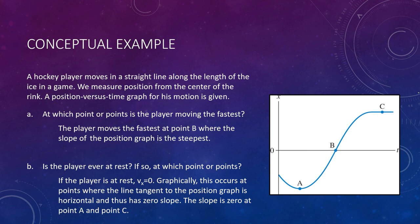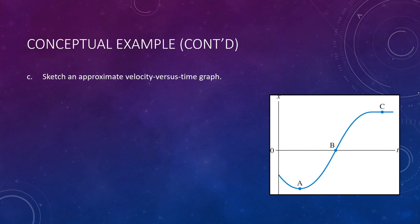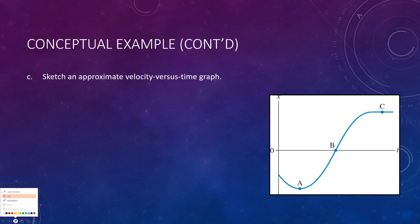Part C asks us to take this graph and sketch the appropriate velocity versus time graph. We've done this before but never with curves, making it more involved. We'll break it down into parts, recognizing there are a couple of different segments in this graph: from zero to A, from A to B, and from B to C.